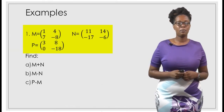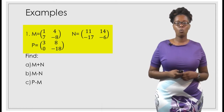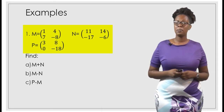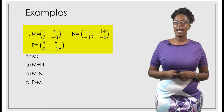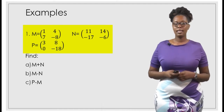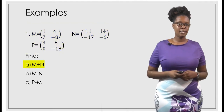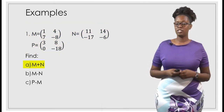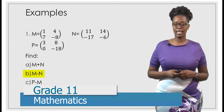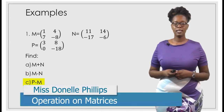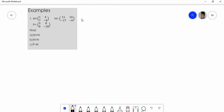Examples. Matrix M equals 1, 4, 7, negative 8. Matrix N equals 11, 14, negative 17, and negative 6. Matrix P equals 3, 8, 0, negative 18. Find: (a) M plus N, (b) M subtract N, and (c) P subtract M.